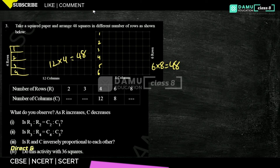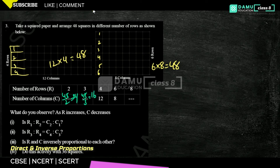For number of rows 2, number of columns: 48 by 2 gives 24. For rows 3: 48 by 3 gives 16. Then for rows 8: 48 by 8 gives 6. So what happened here?